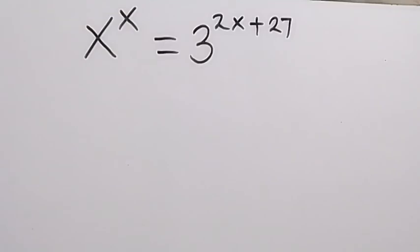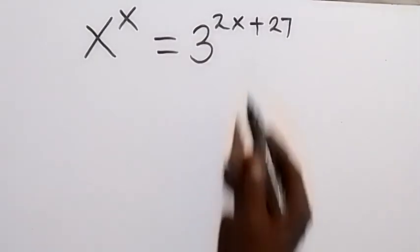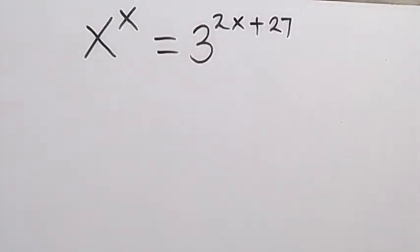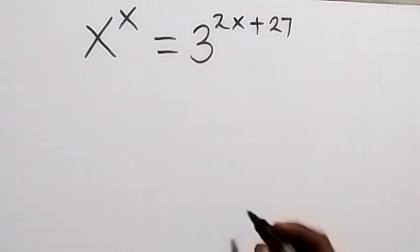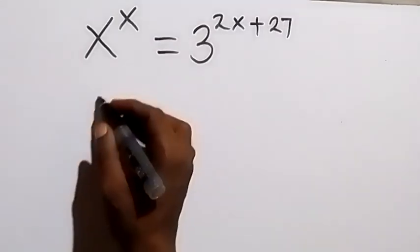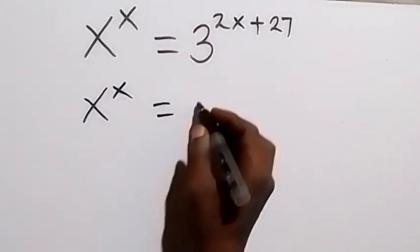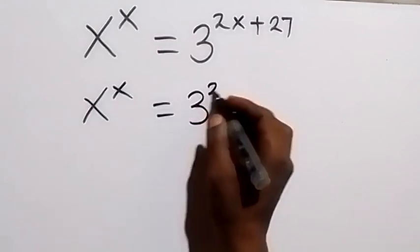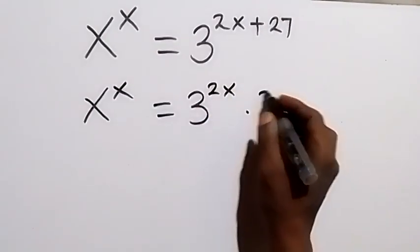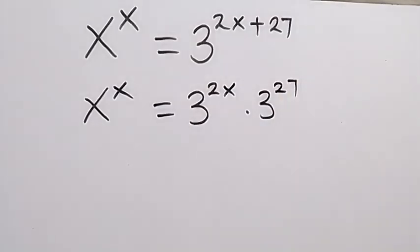Hello, you are welcome. How to solve this problem: x raised to power x equals 3 raised to power 2x plus 27. From here, let's write the right answer. From the law of indices, this becomes x raised to power x equals 3 raised to power 2x times 3 raised to power 27.